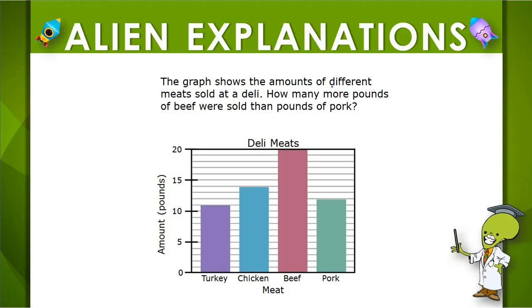We want to know how many more pounds of beef were sold than pork. So we need to check these two bars. Notice that our intervals are of 1.